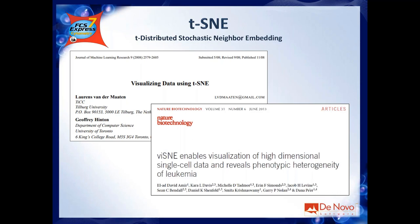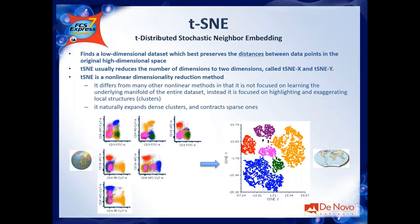The formal definition of tSNE: it finds a low-dimensional dataset that best preserves the distances between data points in the original high-dimensional space. The key word is distances. tSNE cares about distances because distance is a metric you can use to see whether two cells are close to each other in multi-dimensional space — meaning they share a similar phenotype, being similar in CD3, CD4, etc. — or far from each other, meaning they do not share the same phenotype.